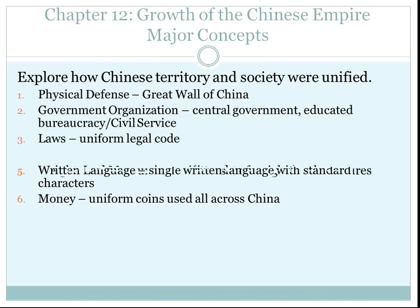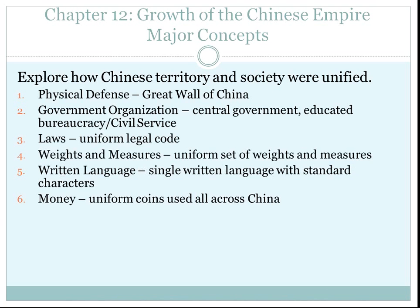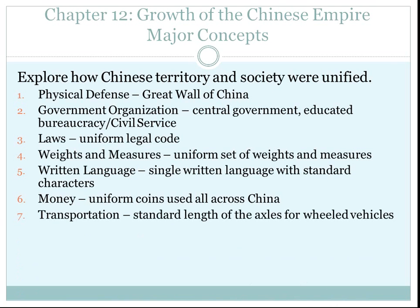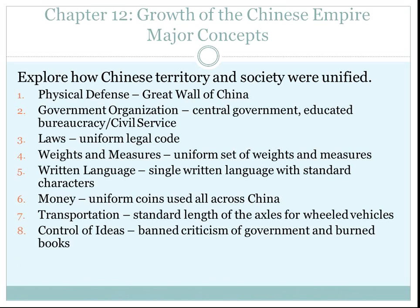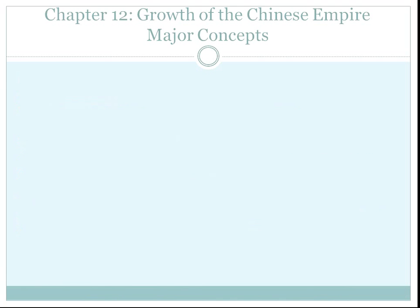It was unified by uniform coins, meaning that the currency was the same no matter where in the country. Seventh, transportation was standardized — the length of axles for wheels so that people could travel and trade faster. And eighth, unfortunately, a control of ideas: censorship of dissent in the government, and sometimes books were burned as well. Those are the eight things that unified Chinese territory and society.